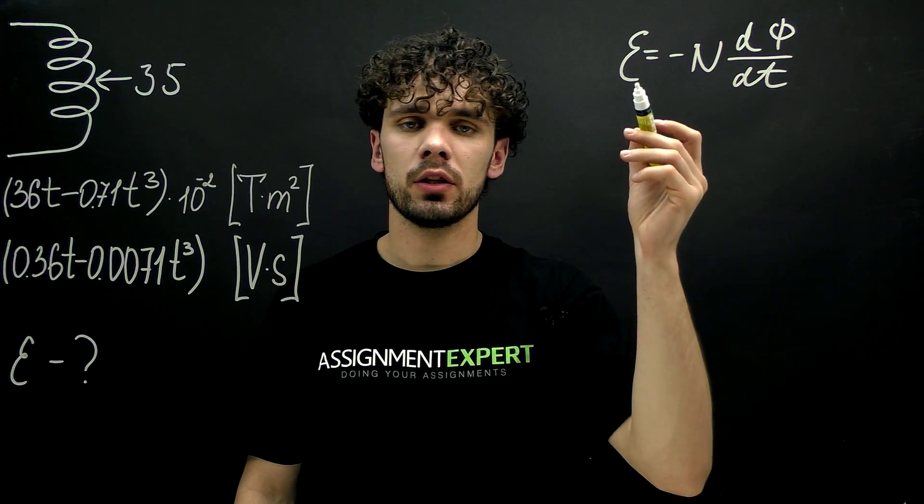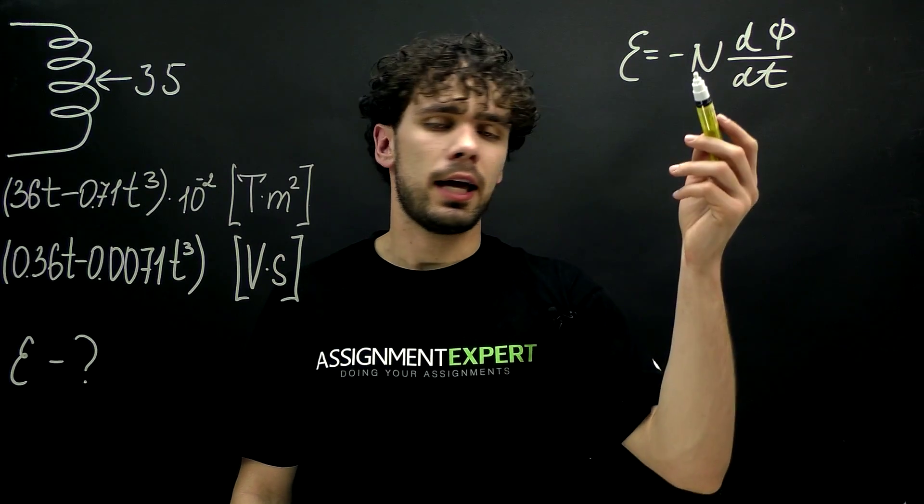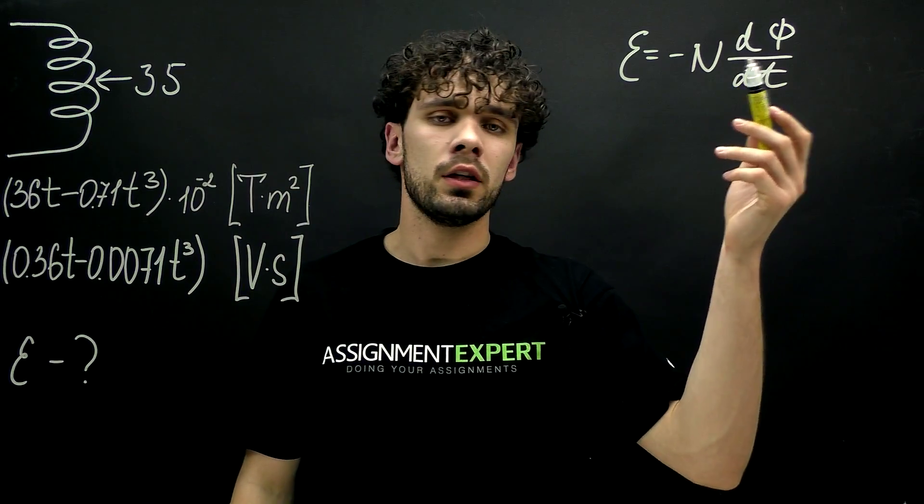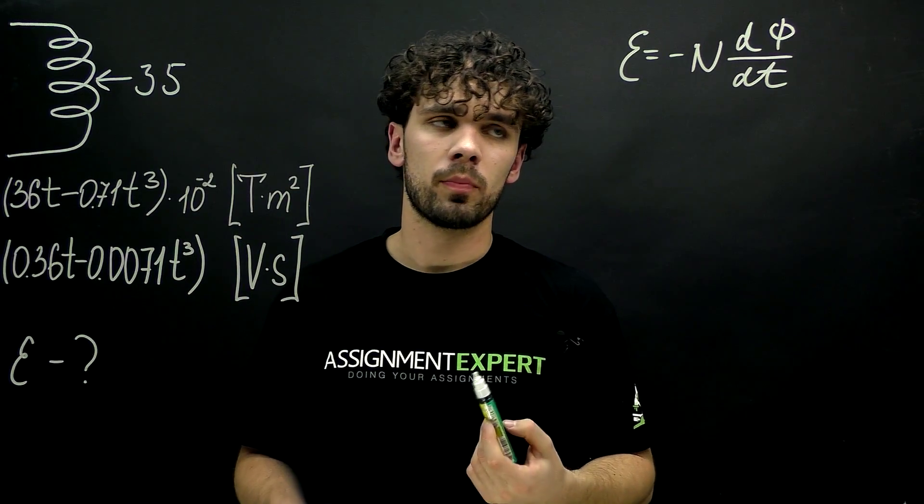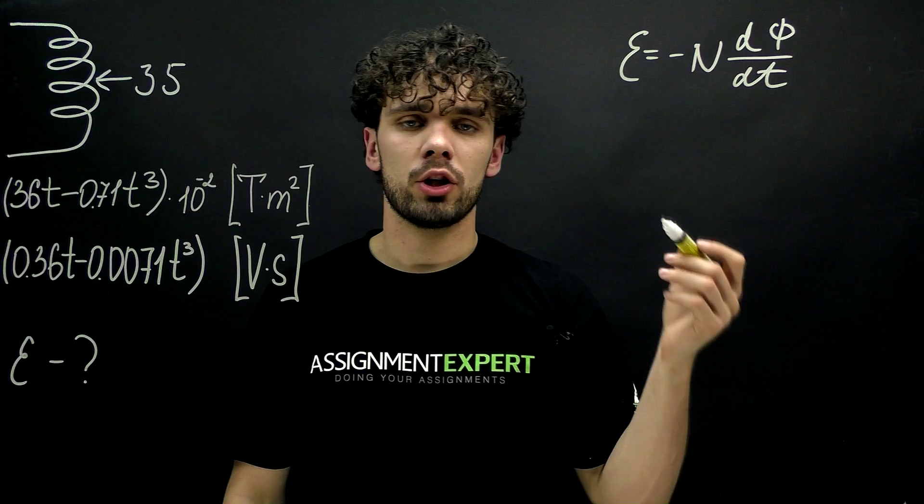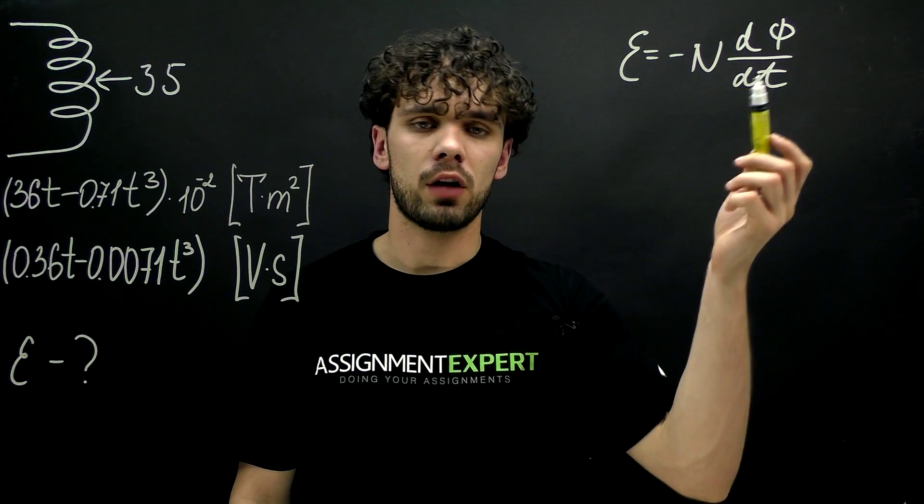So here Epsilon is the induced EMF, n is the number of loops, and phi is the magnetic flux of the loop. So actually this formula shows the rate of change of magnetic flux in time.